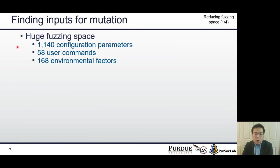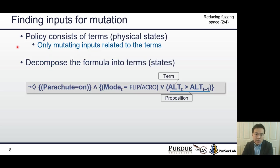Next, we need to mutate input to trigger bugs. However, a control program normally has huge fuzzing space. For example, a control program has more than 1000 configuration parameters. In order to increase the efficiency of fuzzing, we need to reduce huge fuzzing input space. To do that, we suggest only mutating input related to the policy. Let me explain details.